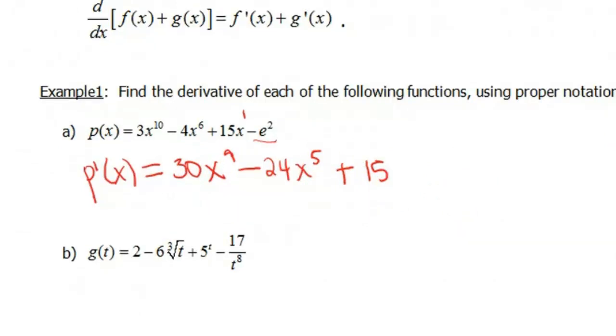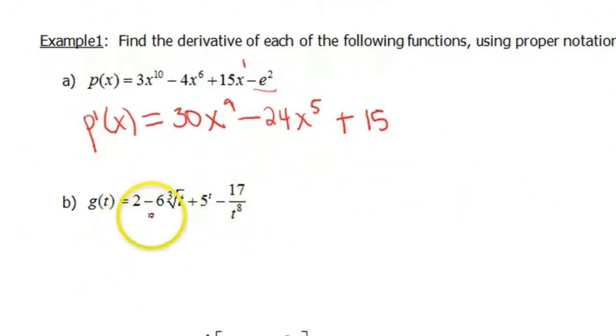The next one I want to look at is g(t) = 2 - 6 times the cube root of t, plus 5^t, minus 17 over t^8. So this one I'm starting to mix up a few different rules that we have. So I see a root in here, I see the cube root of t, we can probably do something with that. I see a constant too, we know what happens with that. 5^t, that's an exponential, so we're gonna have to apply a different rule to that one. And then 17 over t^8 here, we can do some algebra to simplify that messiness.